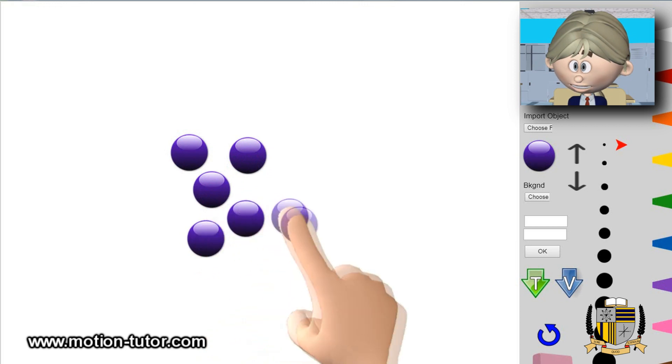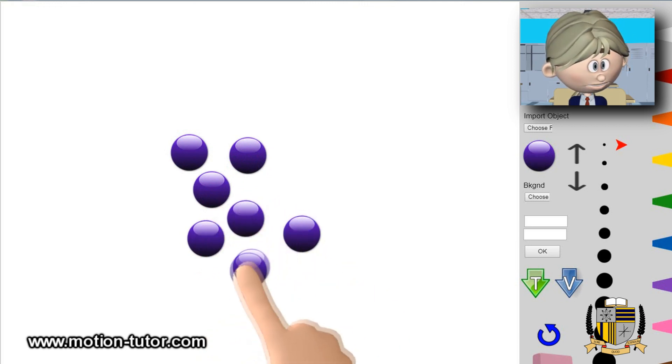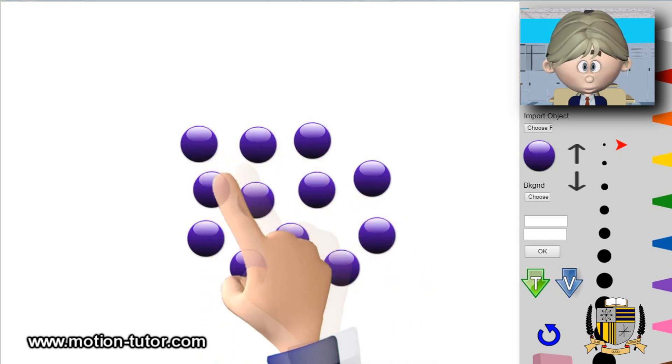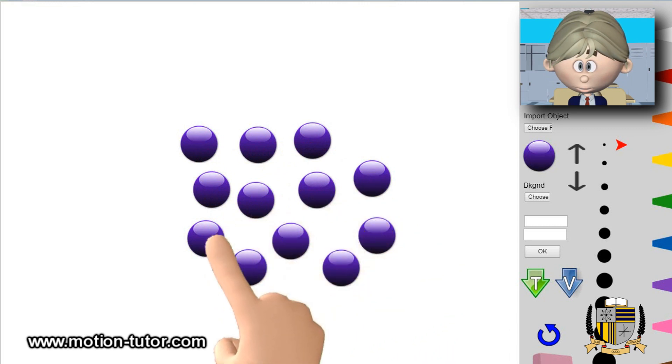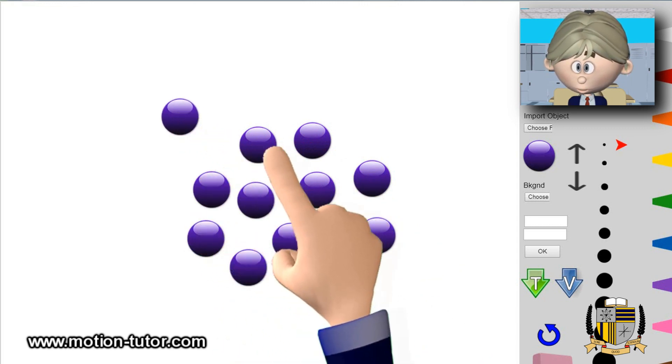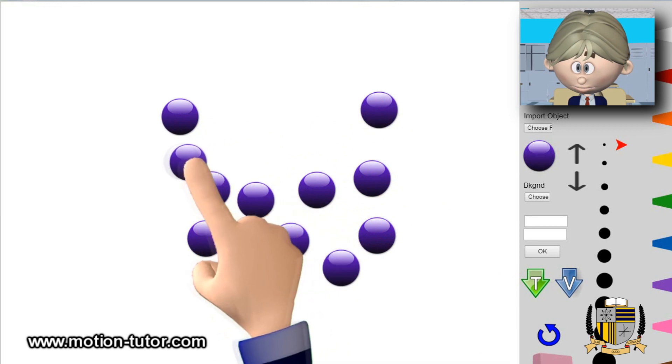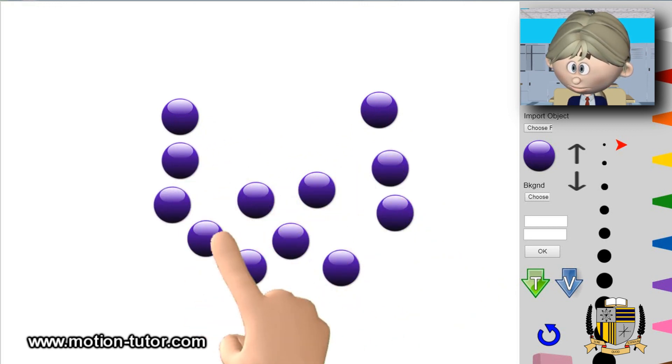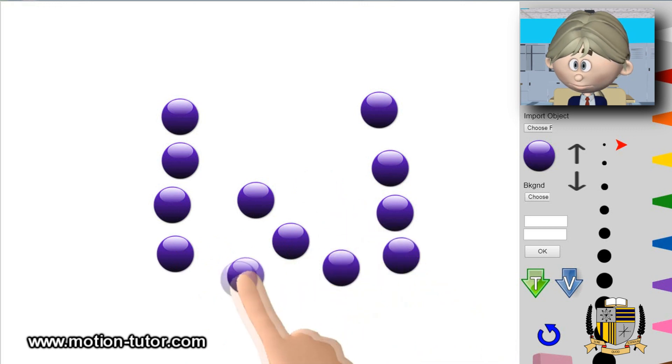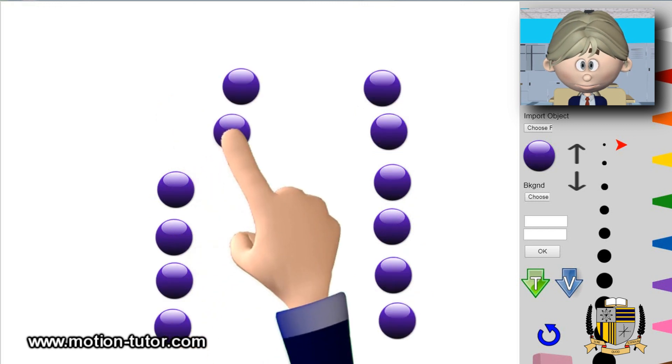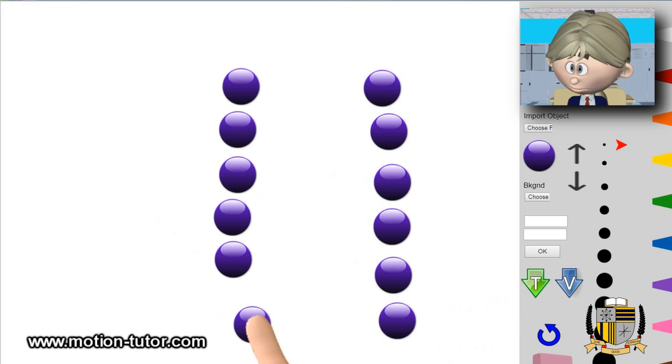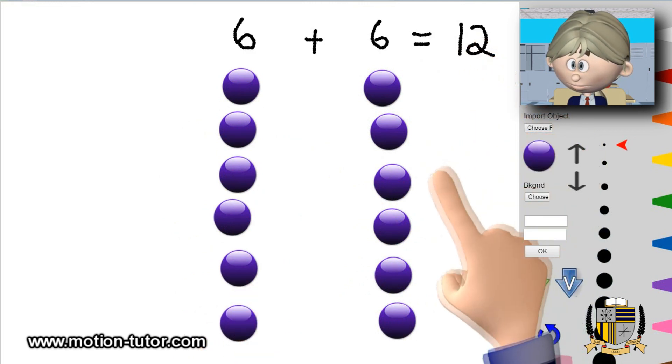Another way we can do this is we just start with 12 counters: 1, 2, 3, 4, 5, 6, 7, 8, 9, 10, 11, 12. And then we just get a double out of this. So if I put one over here, one over there, another here, here, there, there, and I just keep doing this, I will find out that I have 6 on this side and 6 on the other. Here's the double, so 6 and 6 is 12.